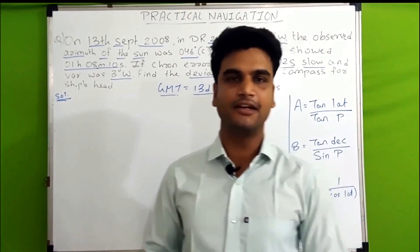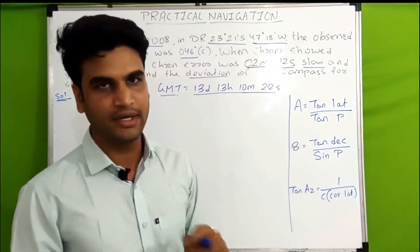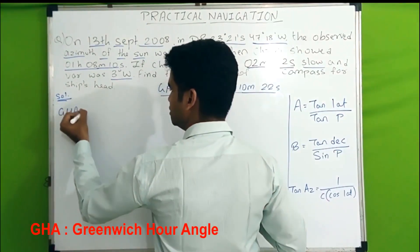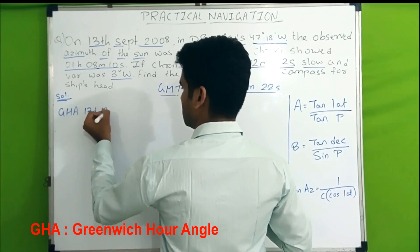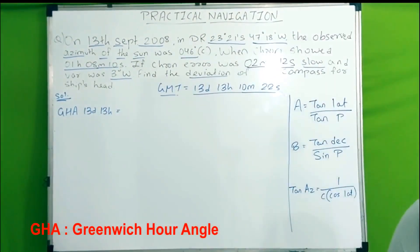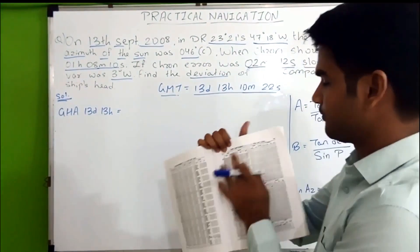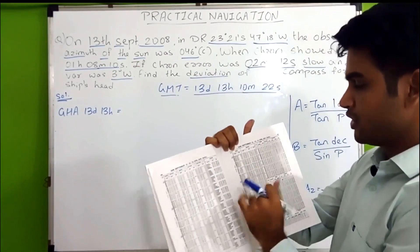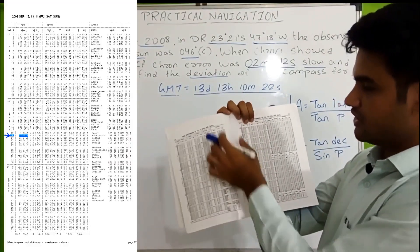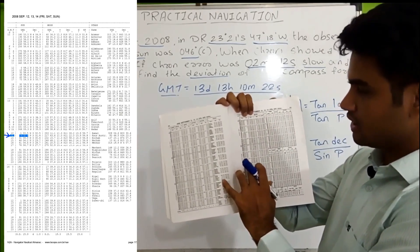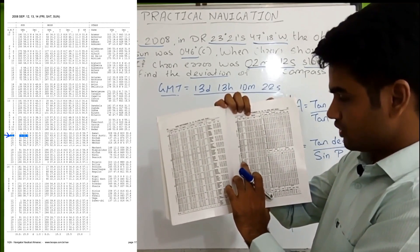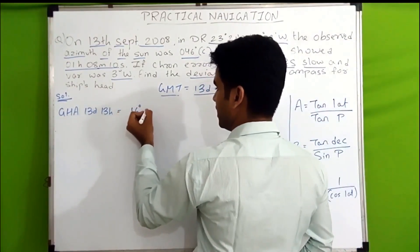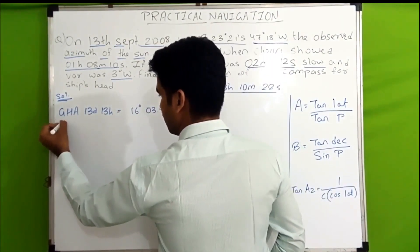Now we will use the ABC method to find compass error. The formulas are for A, B, and C. First we need GHA. We find GHA for 13th September at 13 hours from the daily pages of the nautical almanac. On 13th September at 13 hours, the GHA of the sun is 16° 03.9'. Now we apply the increment for 10 minutes 22 seconds.